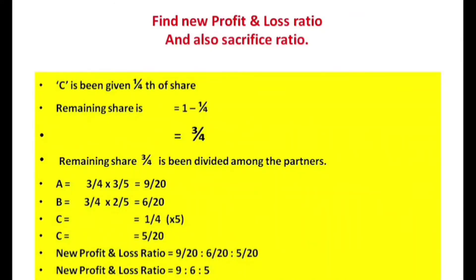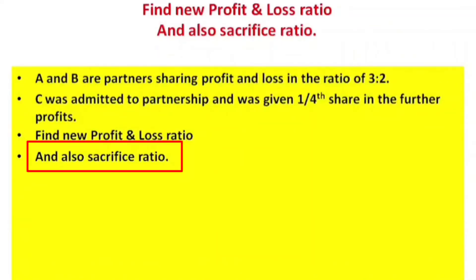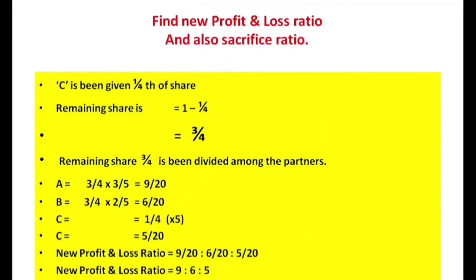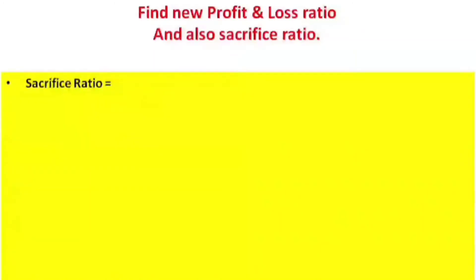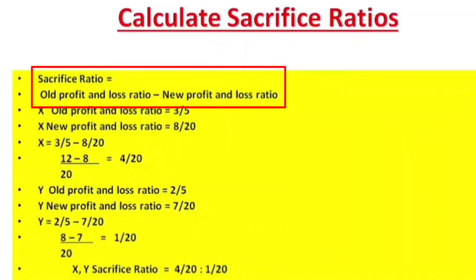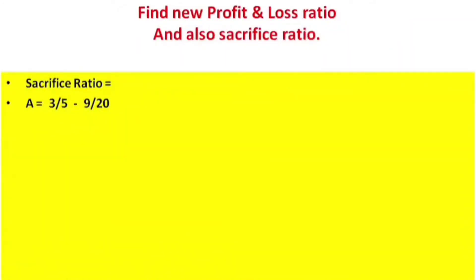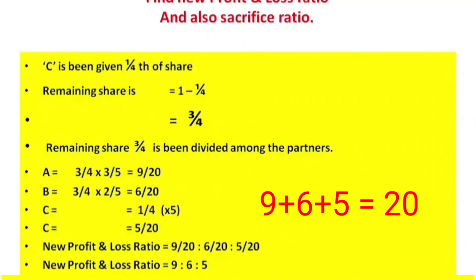The total ratio is 20, meaning A plus B plus C ratio equals 20.